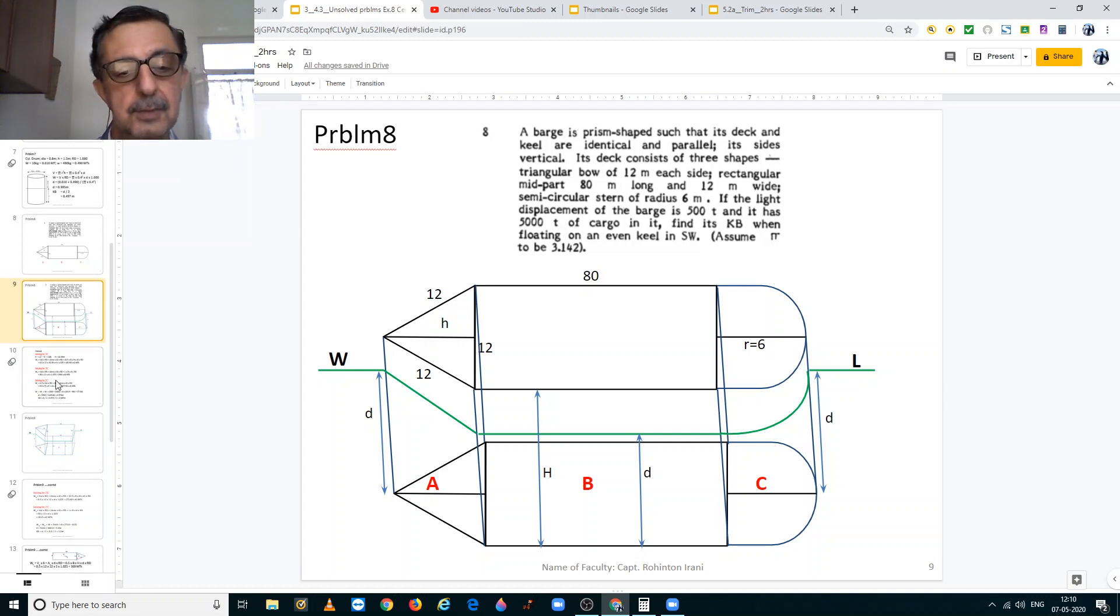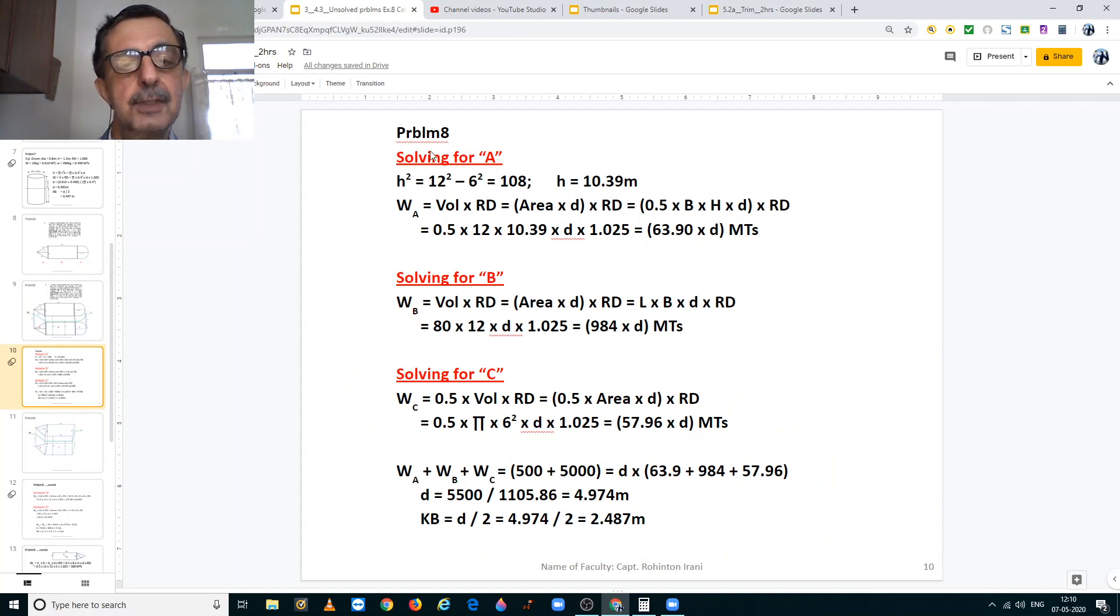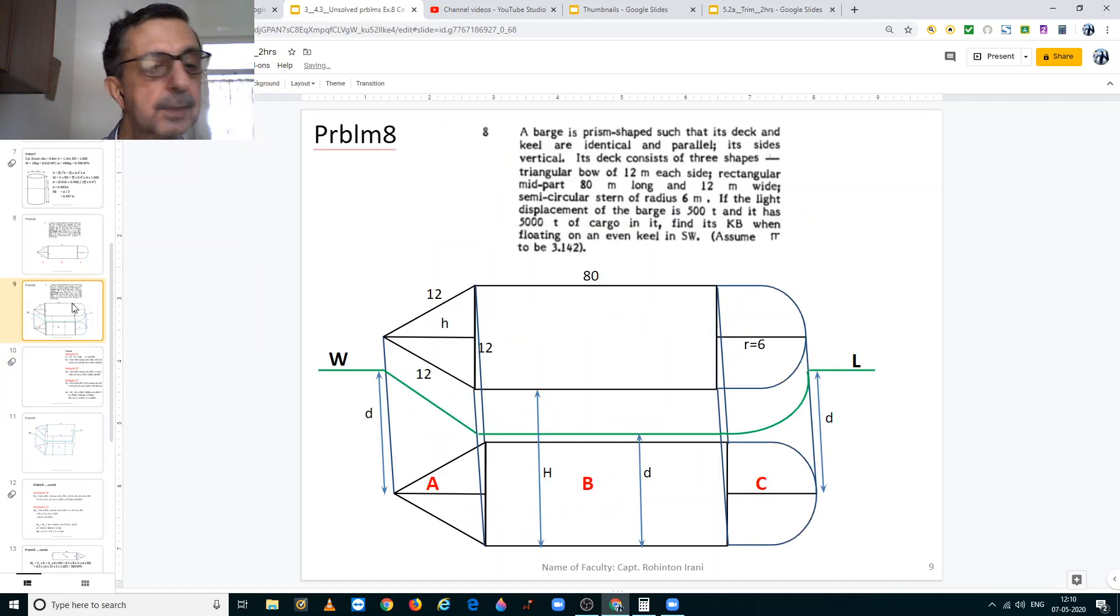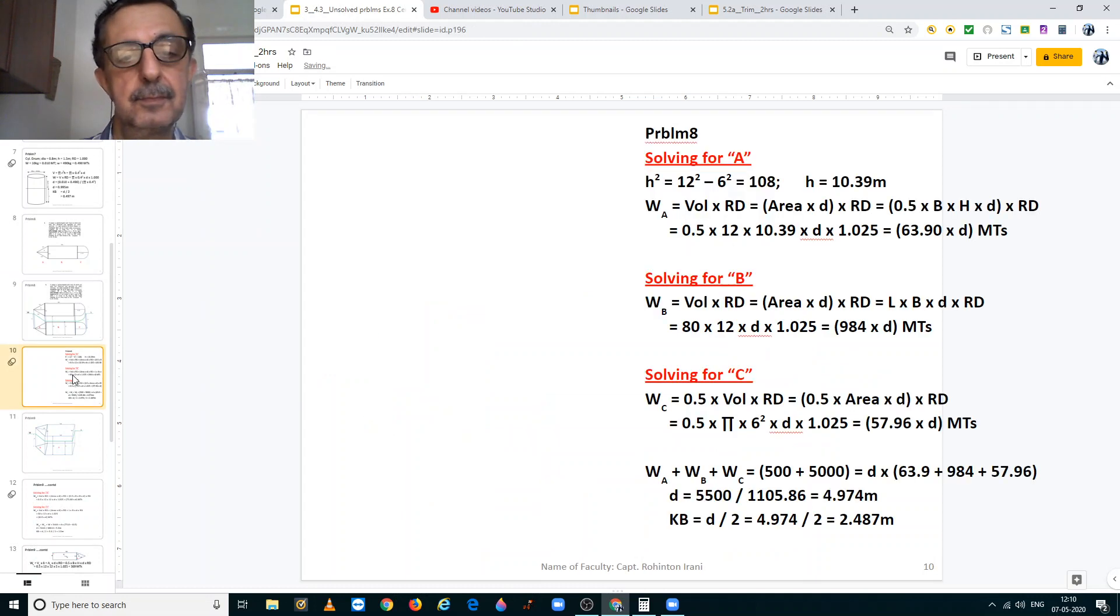When solving for the A section, that is the triangular bow, we first find the value of H, which is the vertical part of the triangular section. We find H squared is equal to 12 squared minus 6 squared. And that gives us the value of 10.39 meters.